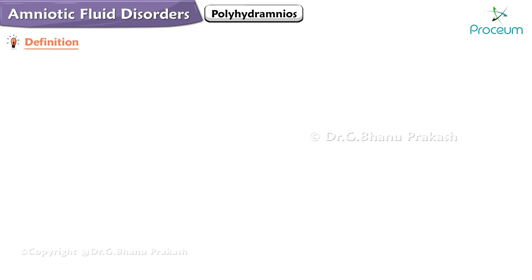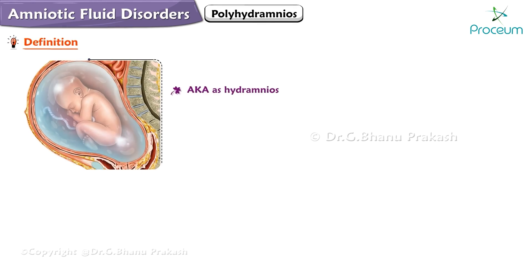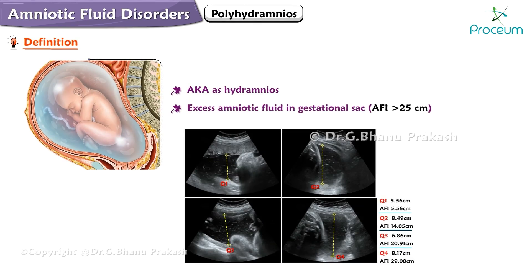Let's begin with a definition. Polyhydramnios, also known as hydramnios, is an excess of amniotic fluid in the gestational sac, with an amniotic fluid index greater than 25 cm, and is associated with an increased risk of various adverse pregnancy outcomes.